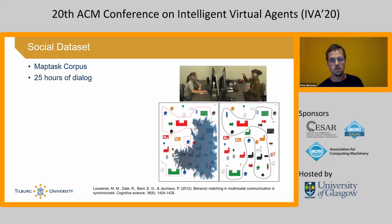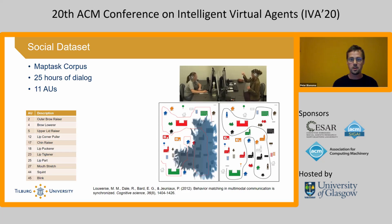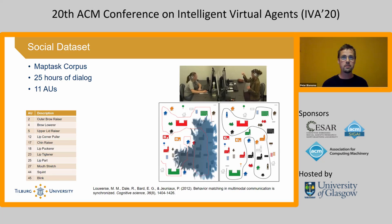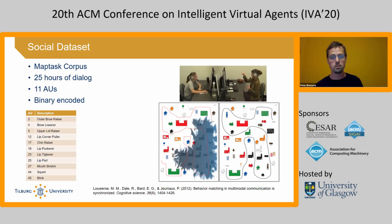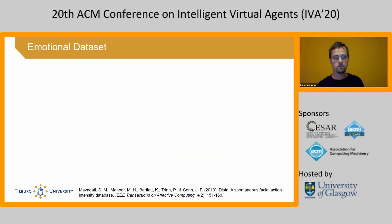Everything was recorded and later encoded by facial action coders for 11 different action units. An action unit refers to a facial muscle. This dataset was encoded in a binary way — either a facial muscle was activated at a certain point, or it was neutral and not contracted.